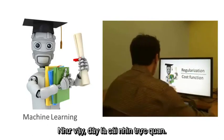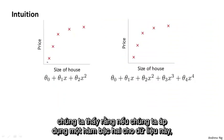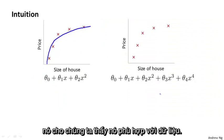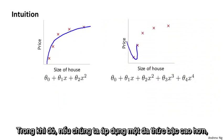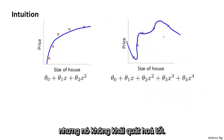So here's the intuition. In the previous video, we saw that if we were to fit a quadratic function to this data, it'd give us a pretty good fit. Whereas if we were to fit an overly high-order degree polynomial, we end up with a curve that may fit the training set very well, but really overfit the data poorly and not generalize well.